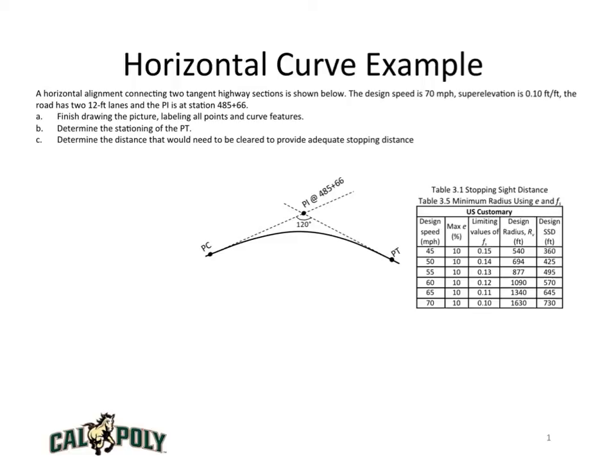Now we're going to talk about a horizontal curve example. Here we're given a horizontal alignment that connects two tangent highway sections. The design speed for this curve is 70 miles per hour.